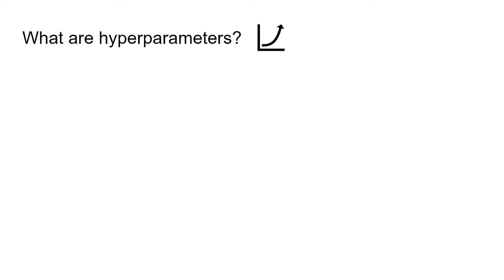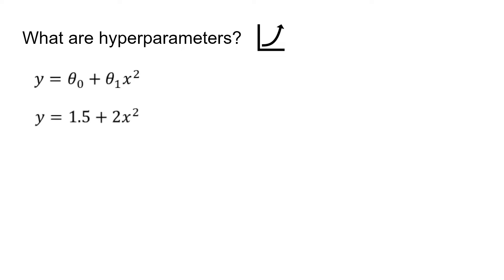So what are hyperparameters? First, what are normal parameters? Let's say we constructed a model with the following structure: y equals theta0 plus theta1 times x squared. And let's say we train this model on a set of data using gradient descent, and we learnt that theta0 is 1.5 and theta1 is 2. So these are just normal model parameters — they're parameters that are learnt from the data; they aren't parameters that we can change or set ourselves.